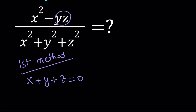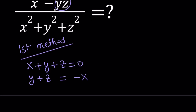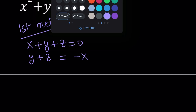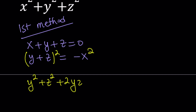After isolating y plus z, I'm going to go ahead and subtract x from both sides. In other words, I'm going to get y plus z equals negative x, and then I'll square both sides. If you square both sides, on the left-hand side we get y squared plus z squared plus 2yz. And then on the right-hand side, you're squaring negative x, so that's going to become positive x squared.